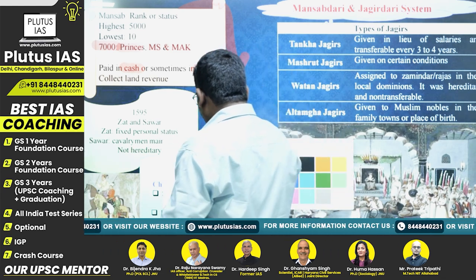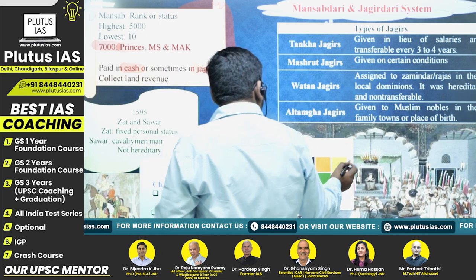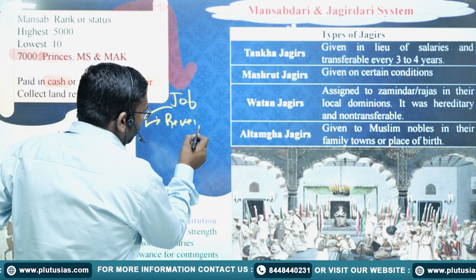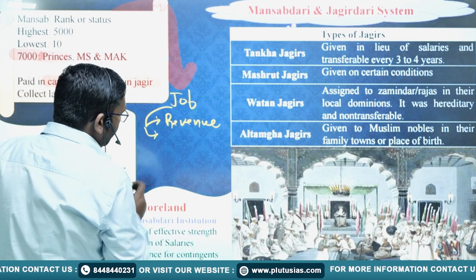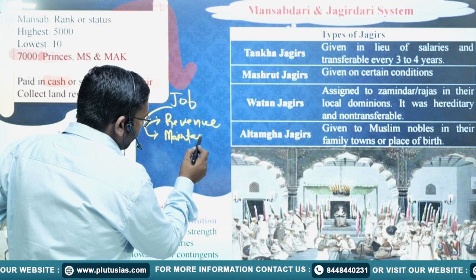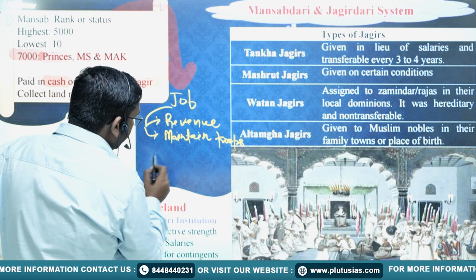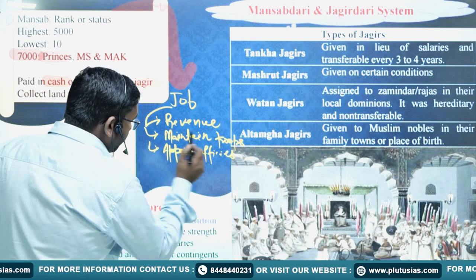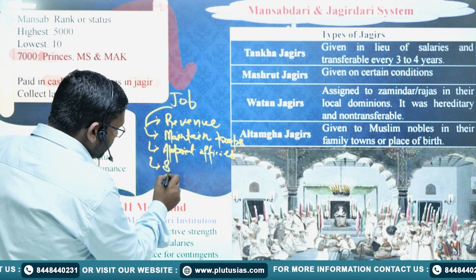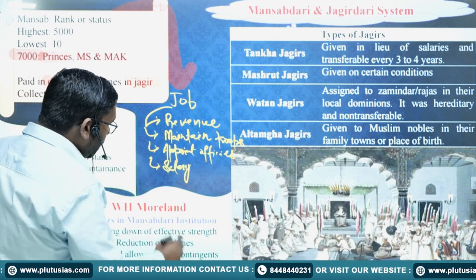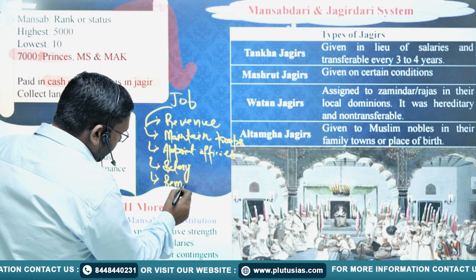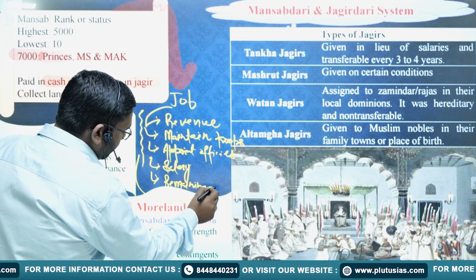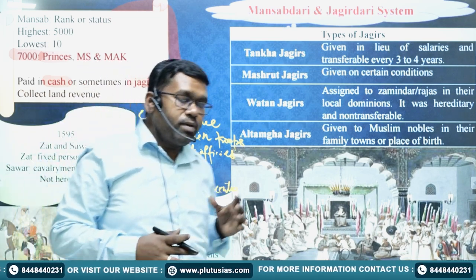Let me tell you briefly what the job of these people is. The Jagirdars will be collecting revenue wherever they are appointed. They will also maintain troops there. They will appoint officials as well. They will take their own salary from the revenue of the Jagir, and whatever money or revenue remains from all these expenses will be sent to the center. This is how the Mansabdari system and the Iqtadari system function similarly.